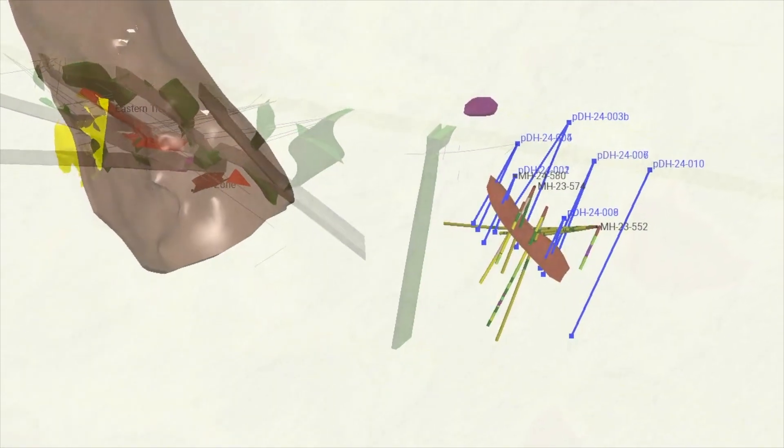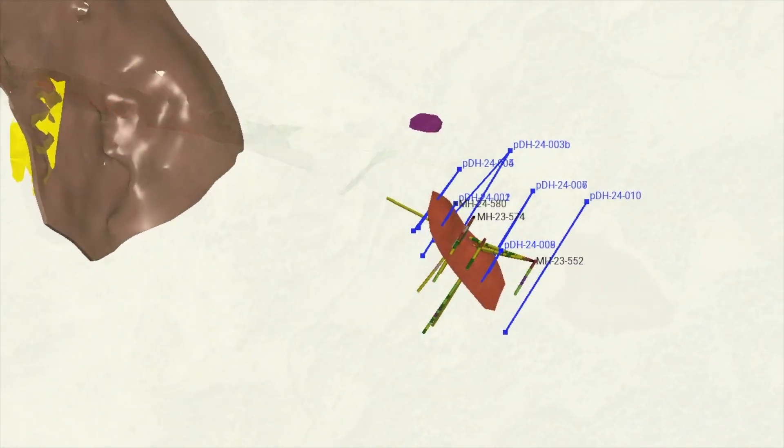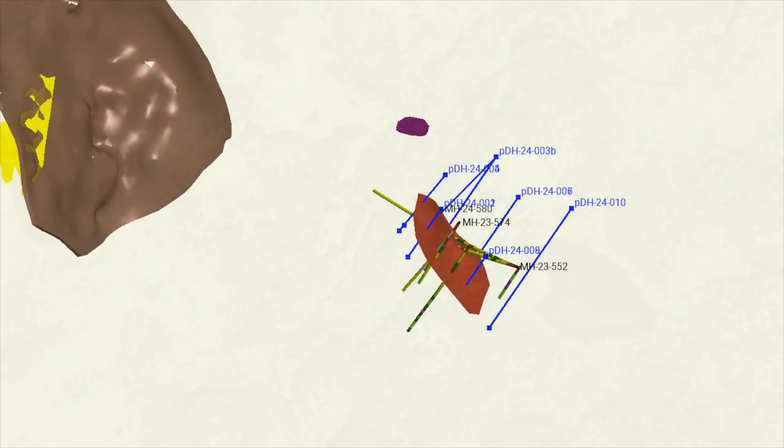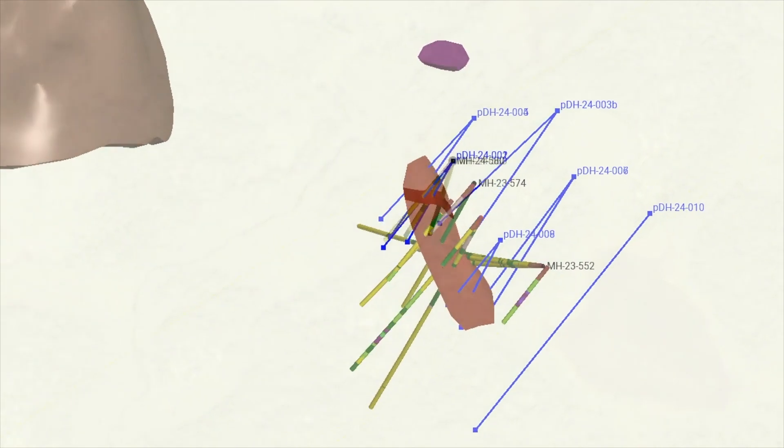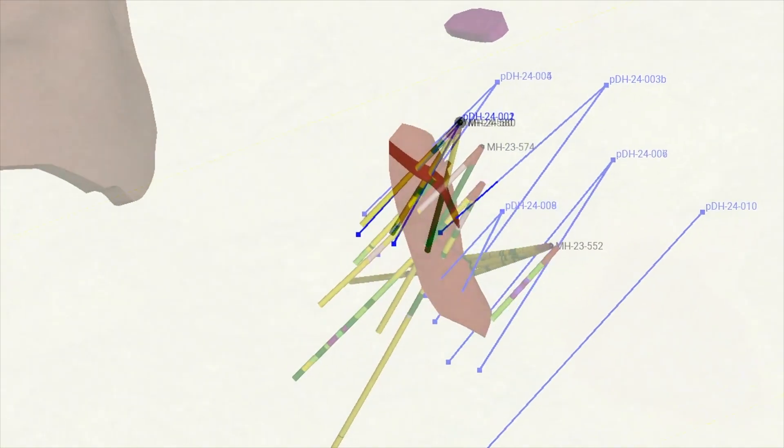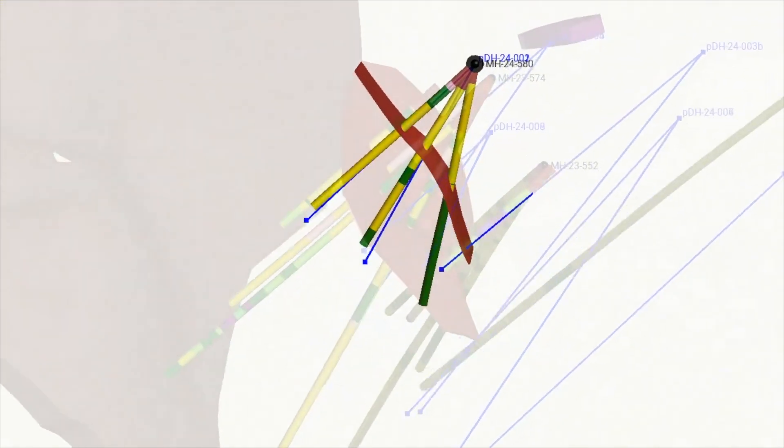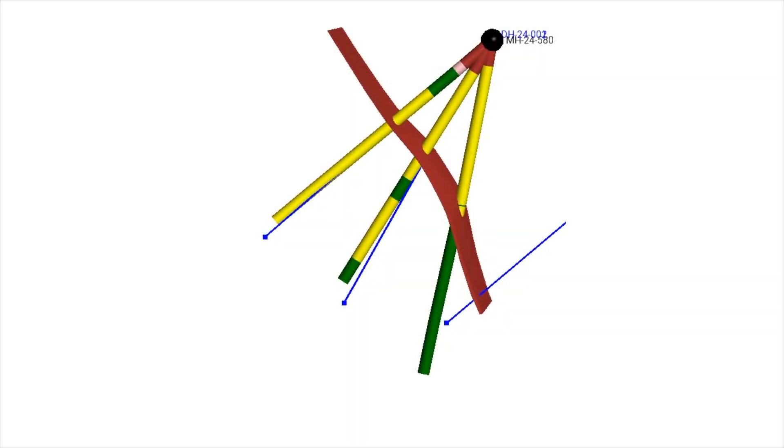Highlighted here in blue are the proposed holes for our current winter drill program. The first two of three holes drilled during the program intersected VG-bearing quartz veins and hole 580 has intersected up to 30 specks of visible gold which is the most seen on this zone to date.